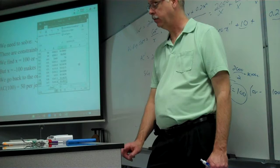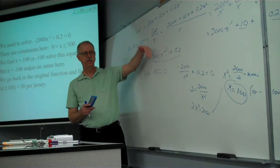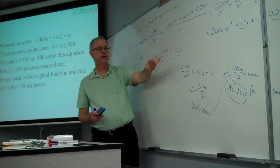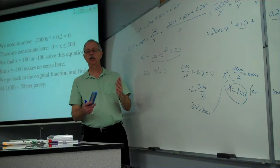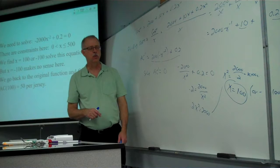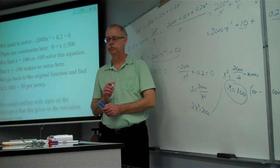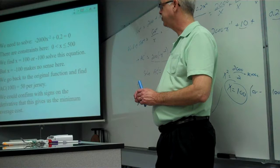Looking back at the Excel table, at a production level of 100, the average cost is $50 per jersey — the smallest value in the table. It comes down to $50 and then goes back up. We can verify from the derivative: before x = 100, the derivative is negative (decreasing); after x = 100, the derivative is positive (increasing). So x = 100 is where we get our minimum average cost.